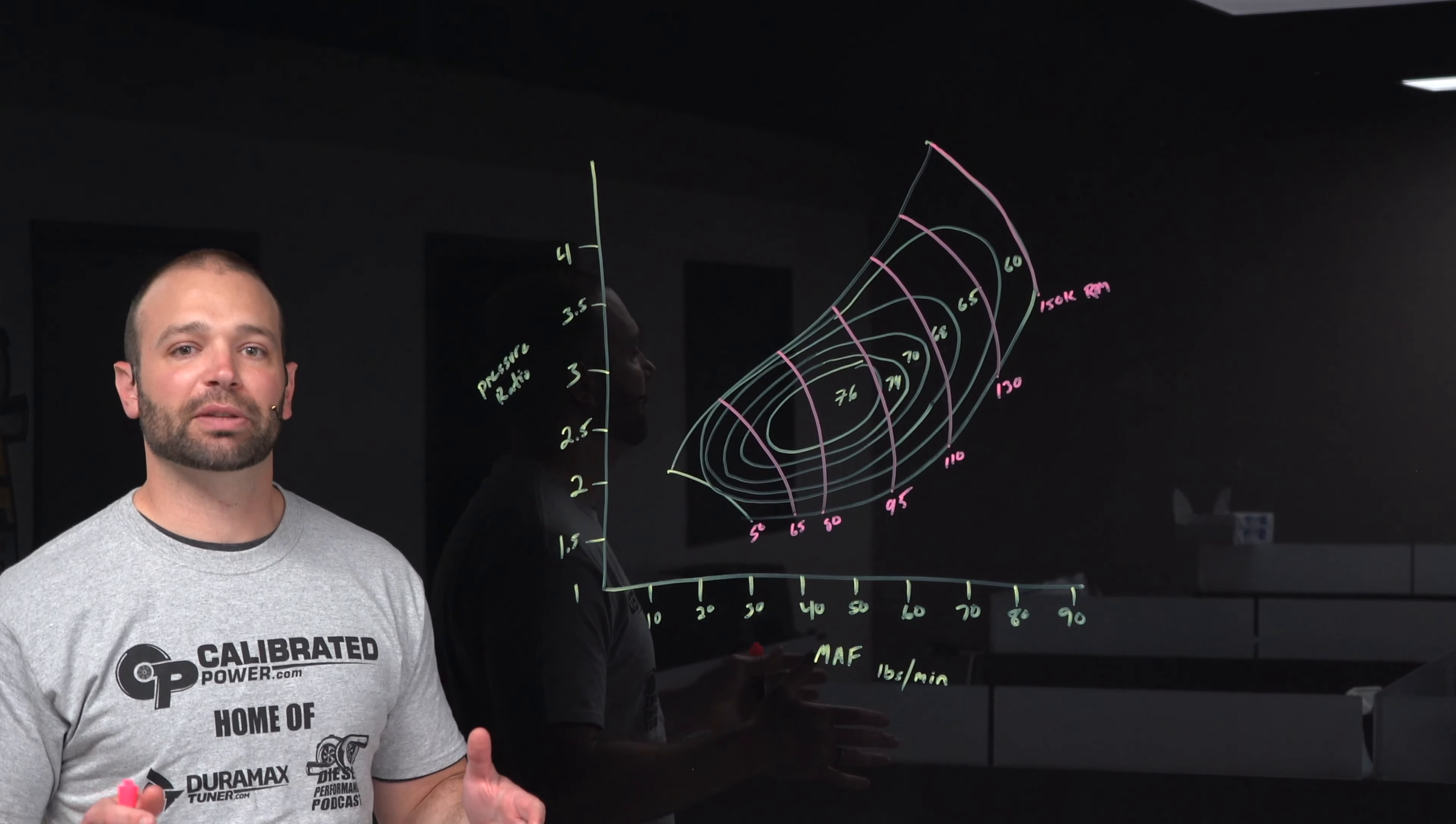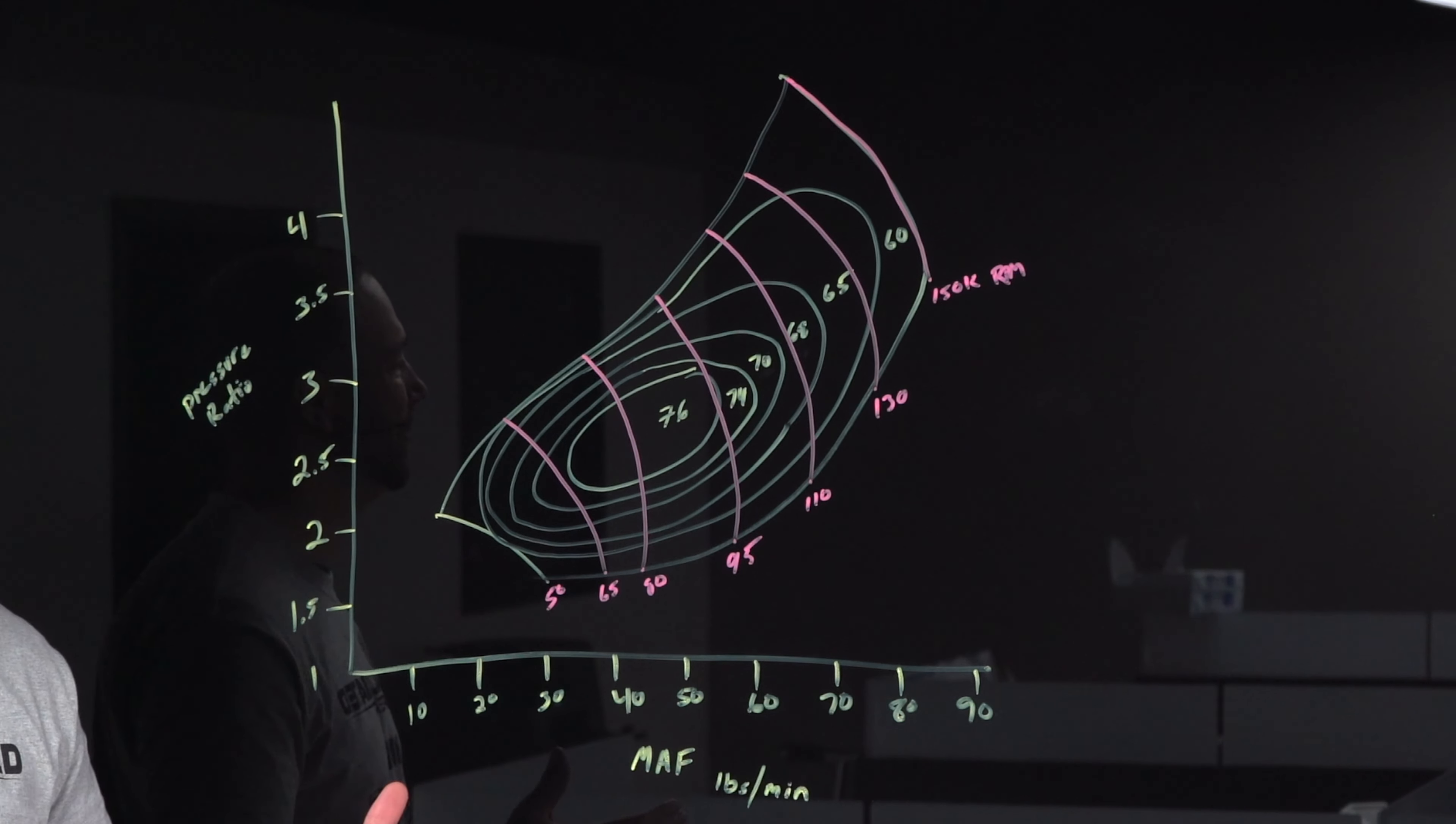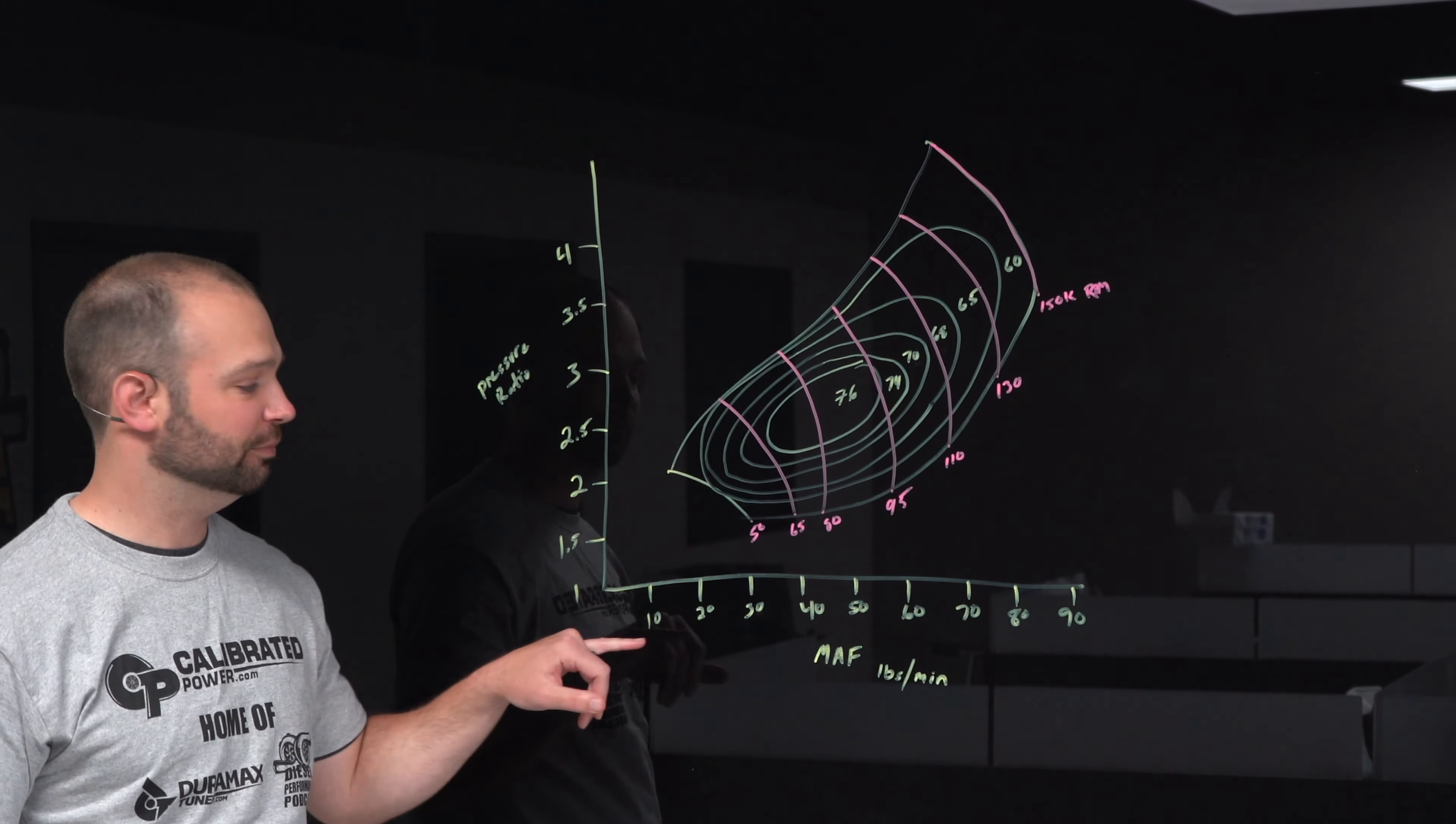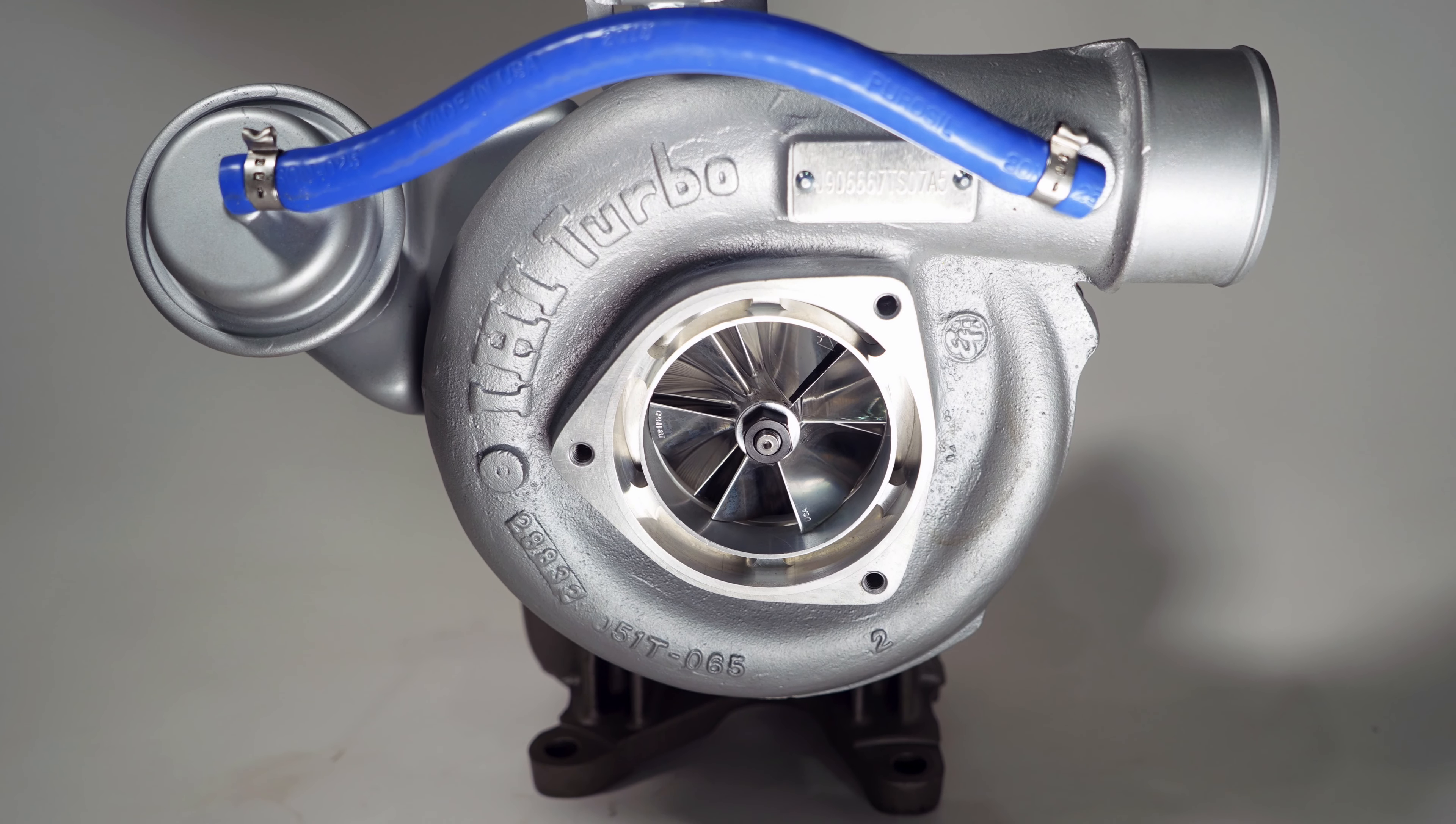For every turbocharger on the market, one of these compressor efficiency graphs could be drawn or is already in existence. What is this thing? Well, it's a little daunting. It's got a lot of numbers on it, but let's go over the basics here. On the bottom, we have airflow. So that is how much air the engine is consuming, how much air goes through the turbocharger in pounds per minute. So that is the mass of the air that goes through the turbocharger.